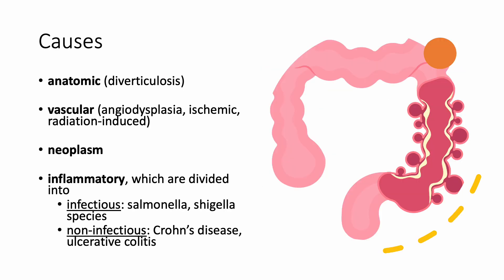The causes of a lower GI bleed can be grouped into several categories: anatomic such as diverticulosis, vascular such as angiodysplasia, ischemic etiologies and radiation-induced, neoplasm, and inflammatory. Inflammatory can further be divided into infectious and non-infectious. Infectious causes are Salmonella and Shigella, and non-infectious causes include Crohn's disease and ulcerative colitis.